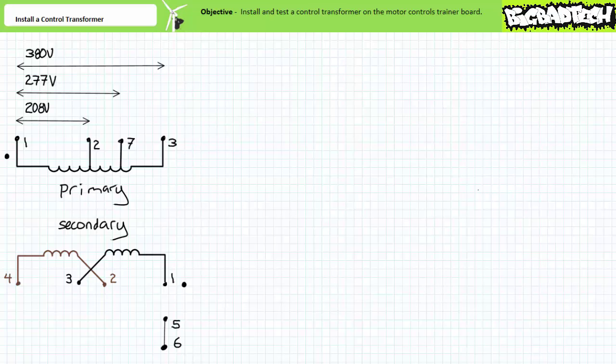The purpose of the control transformer is to establish pilot level voltage. Pilot level voltage is utilized by control elements in a ladder logic diagram like push buttons, relays and coils to govern the operation of primary or power level devices like electric motors and hydraulic systems.